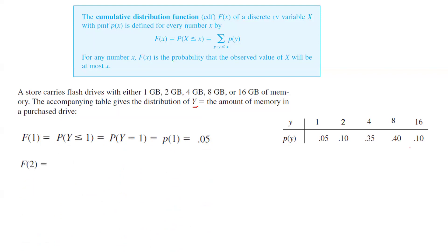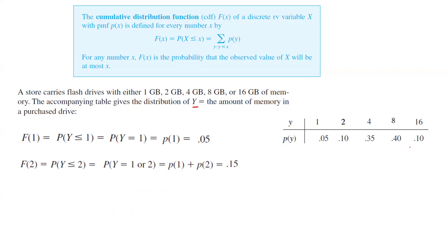If I ask you to find F(2), you're calculating the probability that Y is less than or equal to 2, which is the probability that Y is 1 or 2 — that is, the probability of 1 plus the probability of 2, or 5% plus 10%, which equals 15%.